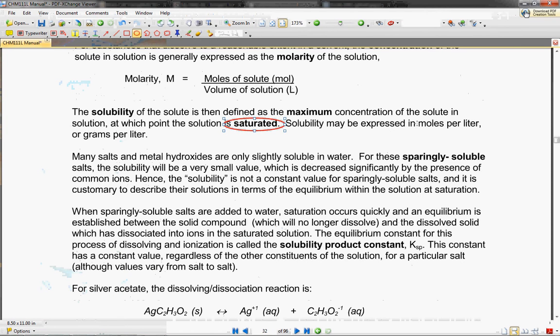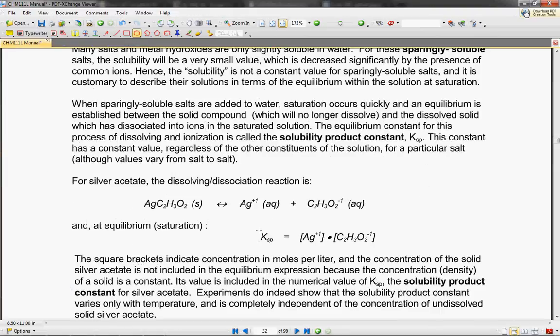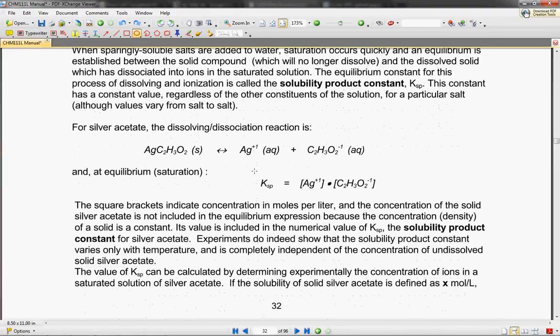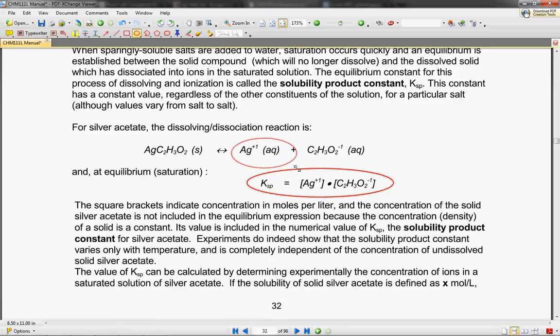So hopefully you guys are familiar with the KSP values and essentially know when to use, you know, if you should put in the silver, if you should put in the acetate. Essentially if it's not a solid, if it's an aqueous solution, it can go into your solubility product constant.